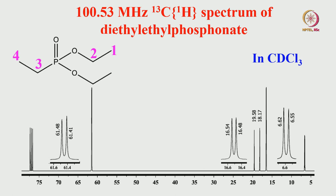So far we saw fluorine coupling. What happens if phosphorus is present? I will take the example of diethyl ethyl phosphonate. This molecule has two CH₃ groups, CH₂ groups, and a phosphorus. Looking at the spectrum carefully—note the title says it is proton decoupled—so there are no carbon-proton couplings present. Any multiplicity present is due to coupling with phosphorus. Each carbon is expanded: this is a doublet, this is a doublet, and this is a doublet. There is also the three-line pattern of equal intensity from the CDCl₃ solvent due to coupling with deuterium.